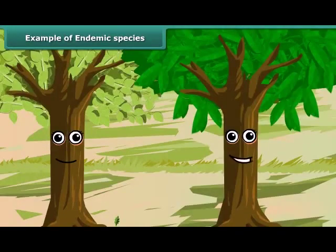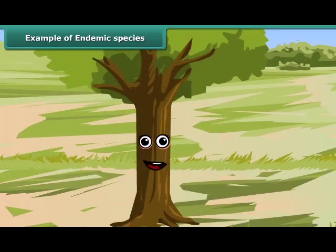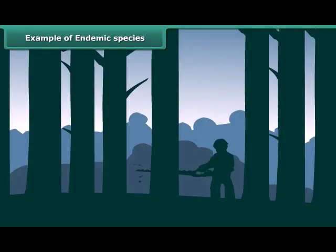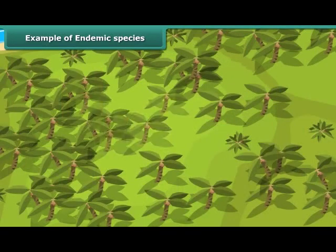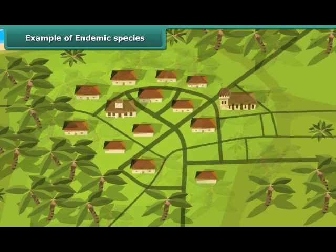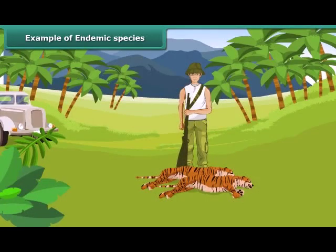These are two endemic flora of the Punchmari Biosphere Reserve, and these are the endemic fauna of this area. What factors lead to making them endemic species? Humans are the main reason. The destruction of their habitat, increasing human population, and introduction of new species may affect the natural habitat of endemic species and endanger their existence.